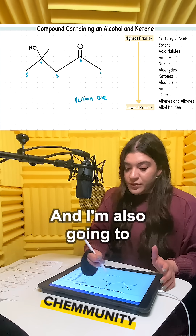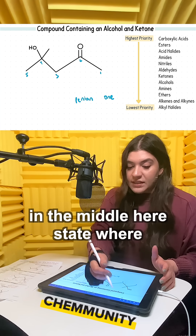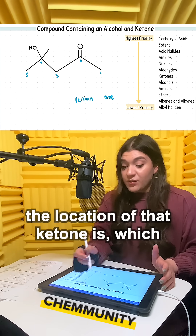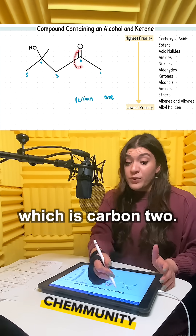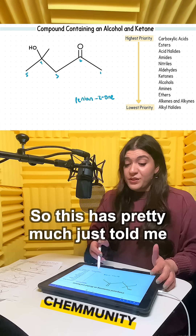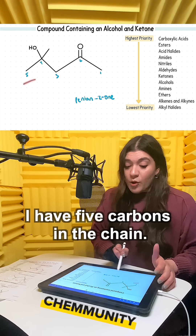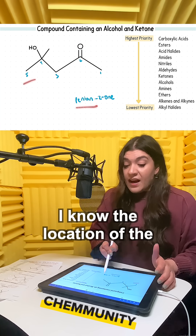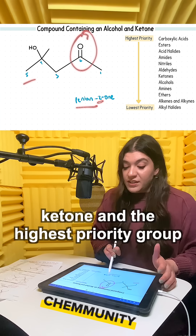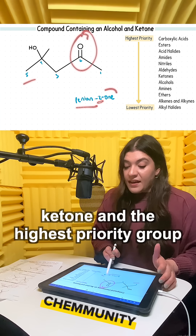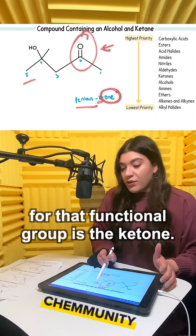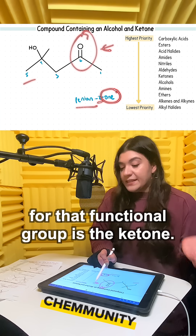And I'm also going to state, in the middle here, where the location of that ketone is, which is carbon two. So this has told me I have five carbons in the chain. I know the location of the ketone, and the highest priority functional group is the ketone.